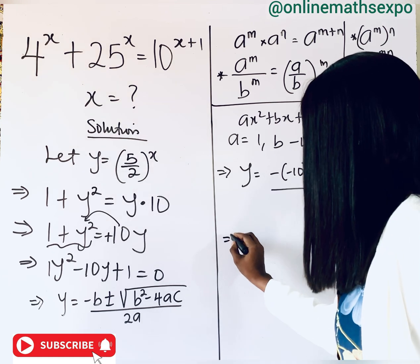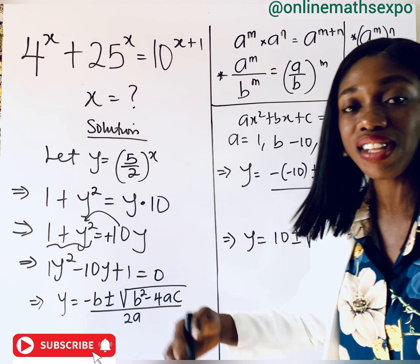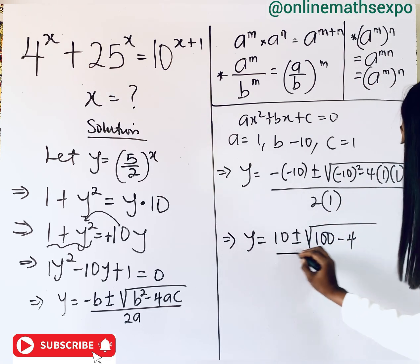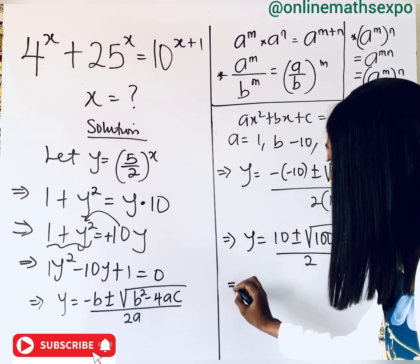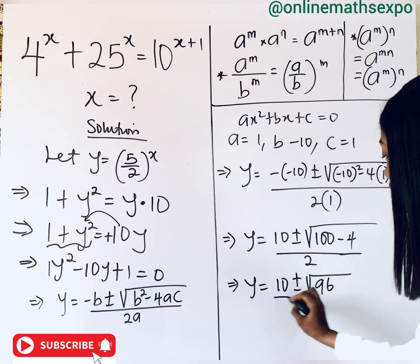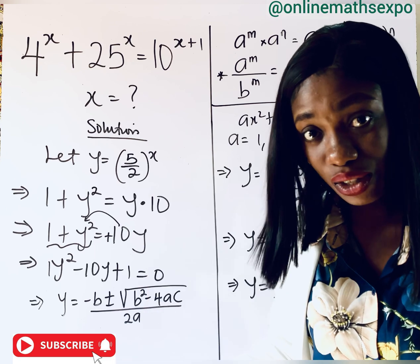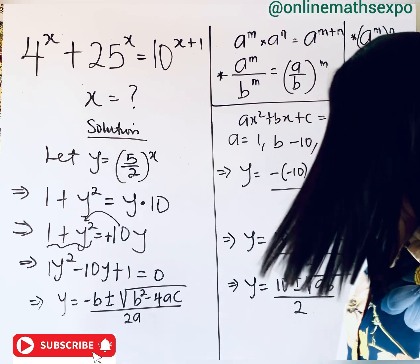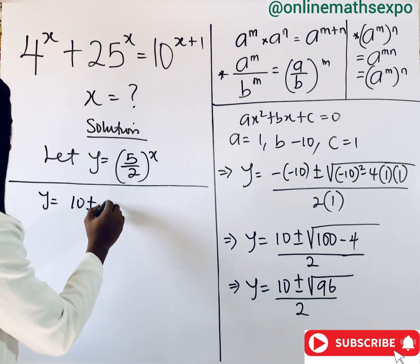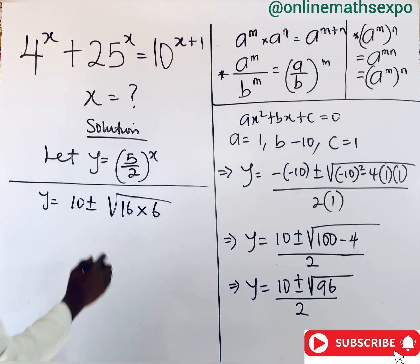Plugging into the formula: y equals negative of negative 10, plus or minus square root of negative 10 squared minus 4 times 1 times 1, all over 2 times 1. Negative 10 squared gives us 100, and 4 times 1 times 1 gives us 4, so we have y equals 10 plus or minus square root of 96, all over 2. Now, 96 has a perfect square factor in it — the perfect square is 16, and 16 times 6 gives 96.